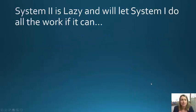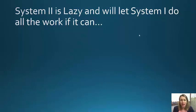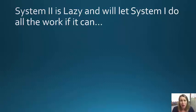System 2 is lazy and will let System 1 do all the work if it can. So if you gave the intuitive answers — 10 cents, 100 minutes, 24 days — and didn't call on System 2 to do a little extra work, you're like almost every other human. You'll rely on System 1 as much as you can and won't use System 2 to do your critical thinking. This class is all about knowing when to call on System 2 when we need it to think critically.